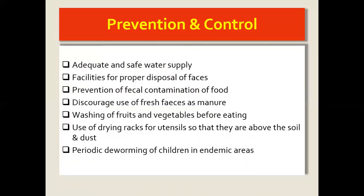Prevention and control includes: having an adequate safe water supply to help in washing hands and washing food like fruits and vegetables. Proper disposal of feces is essential, as defecating outside gives a chance for eggs to spread. Prevent fecal contamination of food, discourage the use of fresh feces as manure, wash fruits very well, use drying racks for utensils so they stay above the soil and dust, and periodically deworm children in endemic areas.